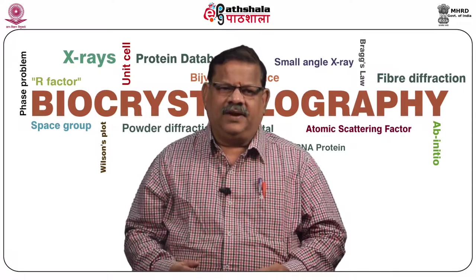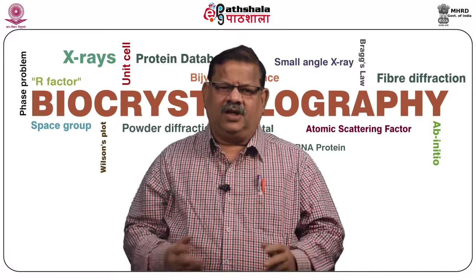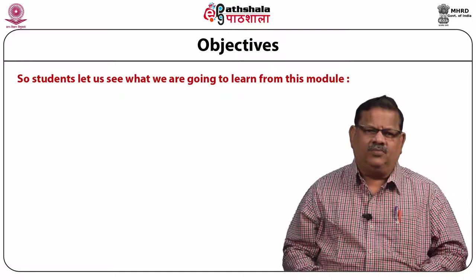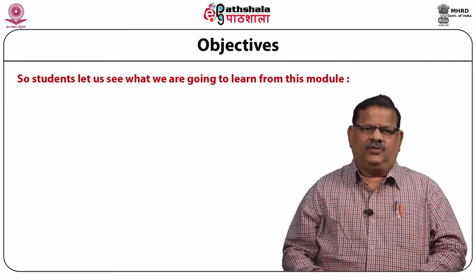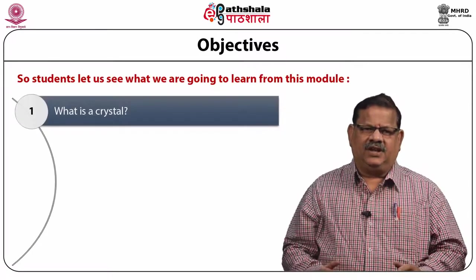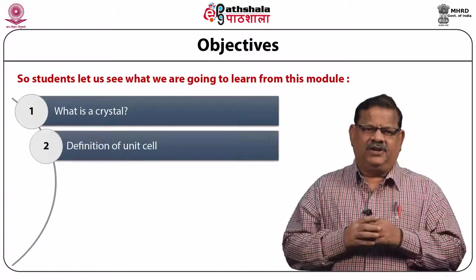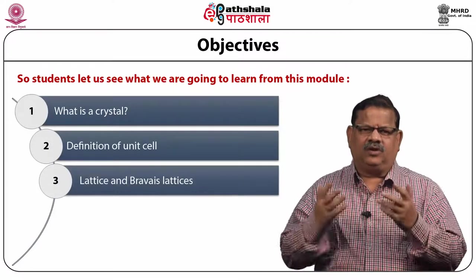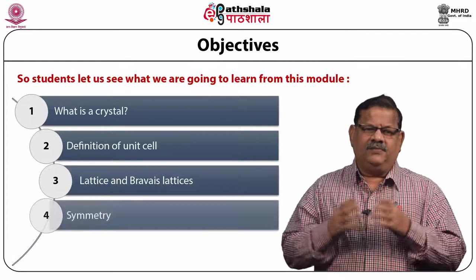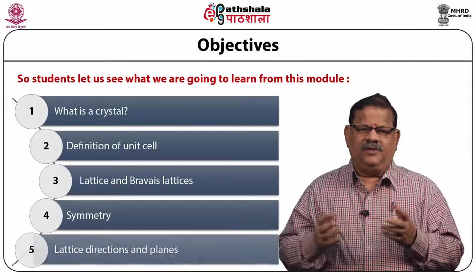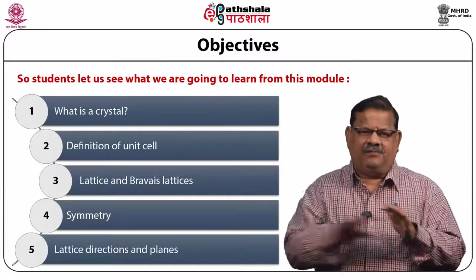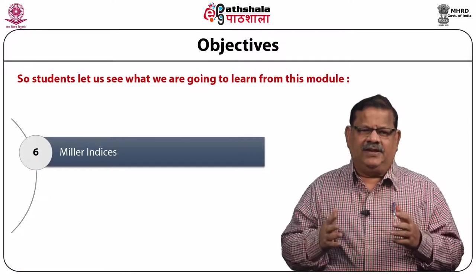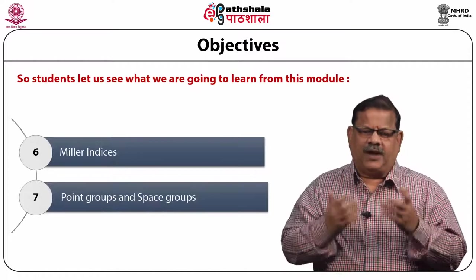All these modules come under the paper biocrystallography. So students, let us see what we are going to learn in this module as the objectives. We are going to learn what is a crystal, how to define a unit cell, what do you mean by a lattice and what are Bravais lattices, what do you mean by symmetry, lattice directions and planes, what are meant by Miller indices, and finally what do you mean by point groups and space groups.